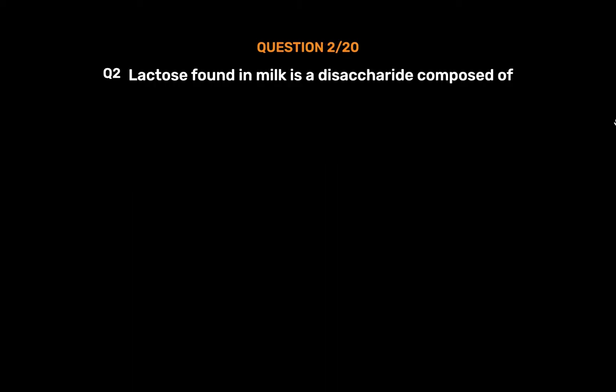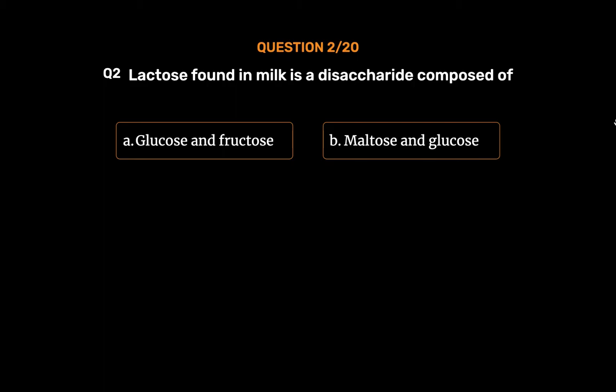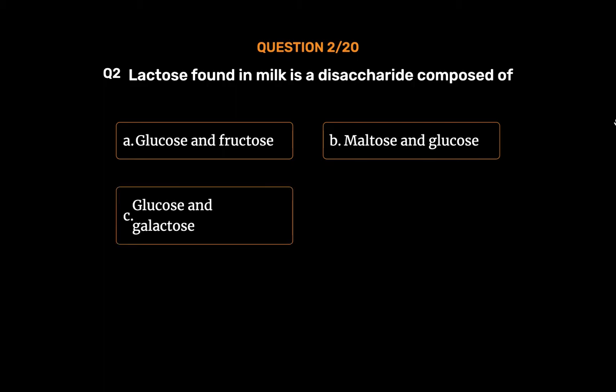Question 2: Lactose found in milk is a disaccharide composed of — Option A: Glucose and Fructose. Option B: Maltose and Glucose. Option C: Glucose and Galactose. Option D: None of these.